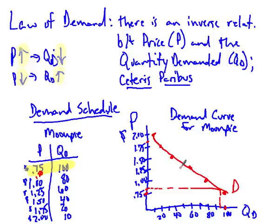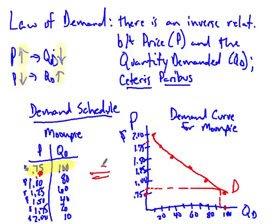To sum up: the law of demand says there's an inverse relationship between price and quantity demanded, ceteris paribus. To get the demand curve, we start with a demand schedule — at various prices, what is the quantity demanded? We take that data, plot each point, connect the dots, and that gives us the demand curve.